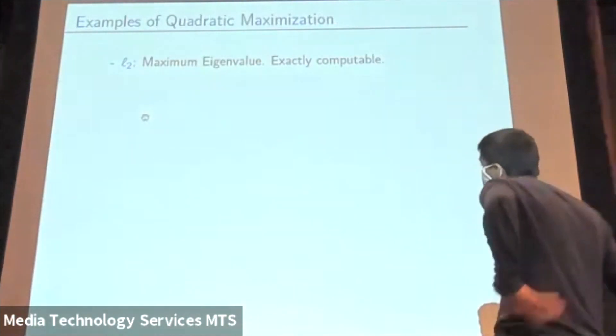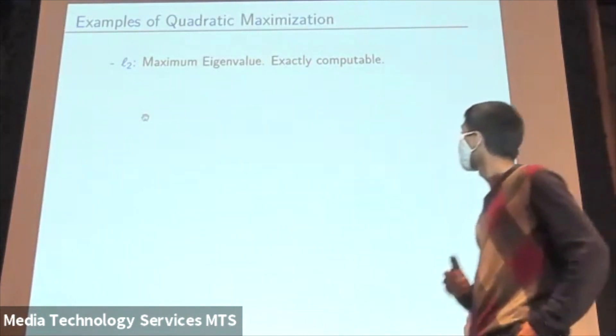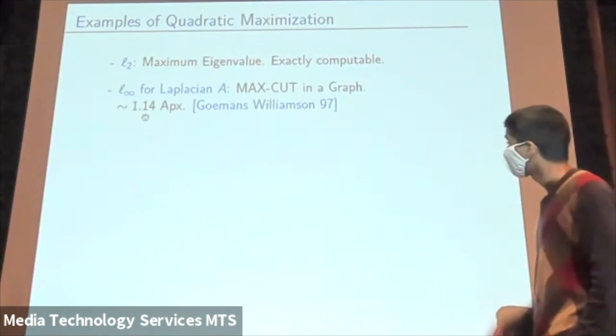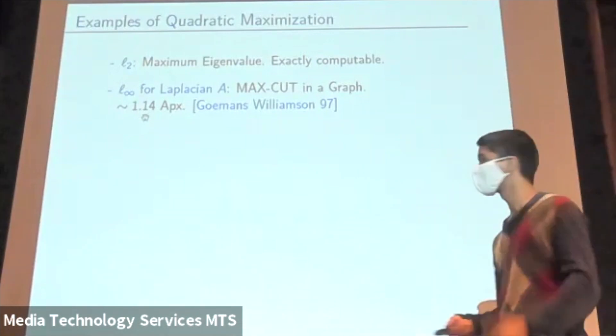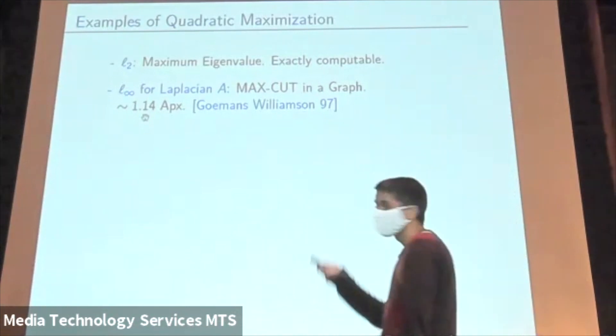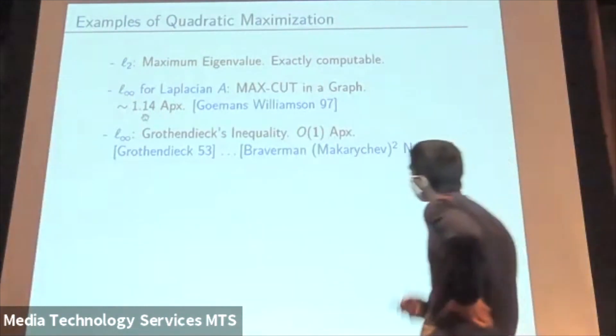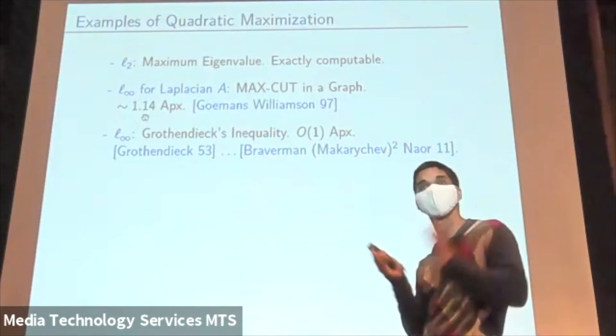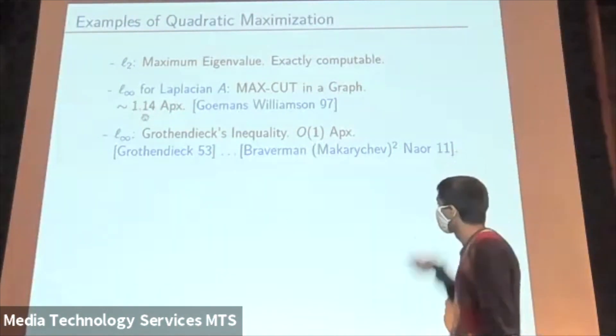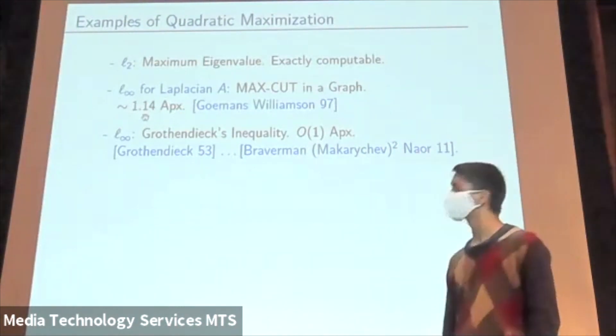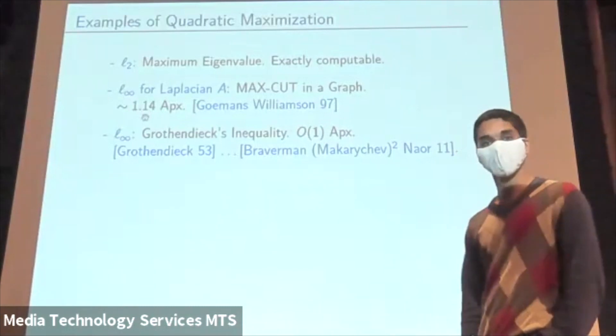Let's see some concrete examples of this. If we take the norm as L2, this is the familiar maximum eigenvalue, and this can be computed exactly. If we take the norm as L infinity and we specialize the set of matrices to the Laplacian of a graph, we recover the problem we talked about earlier, max cut. And as I showed you, we have this constant factor approximation. If we consider the case of L infinity, but for more general linear operators, we actually obtain Grothendieck's inequality, the case of Grothendieck's inequality, which is a famous inequality that appears in several different areas. And then again, we can get a constant factor approximation.